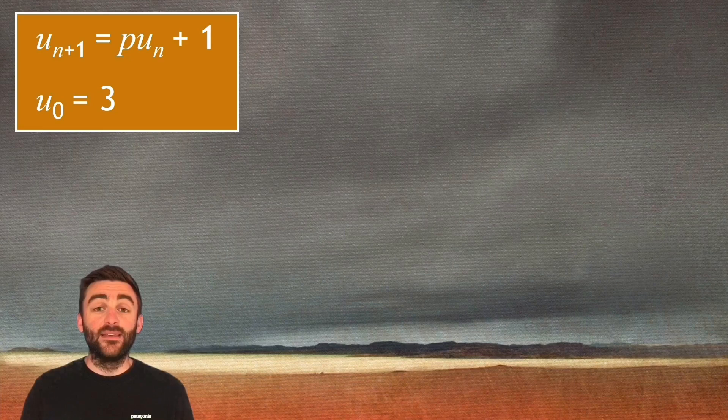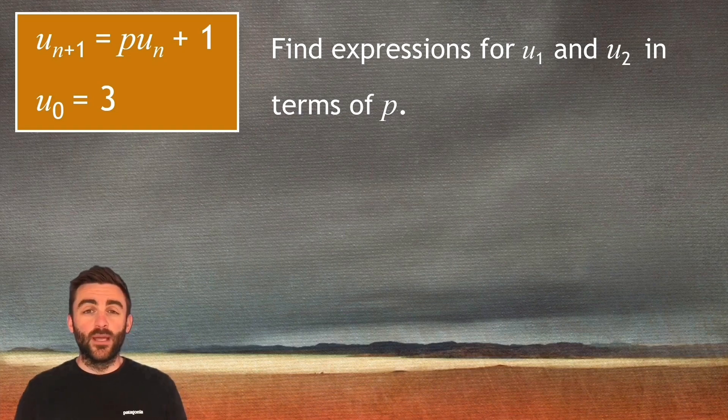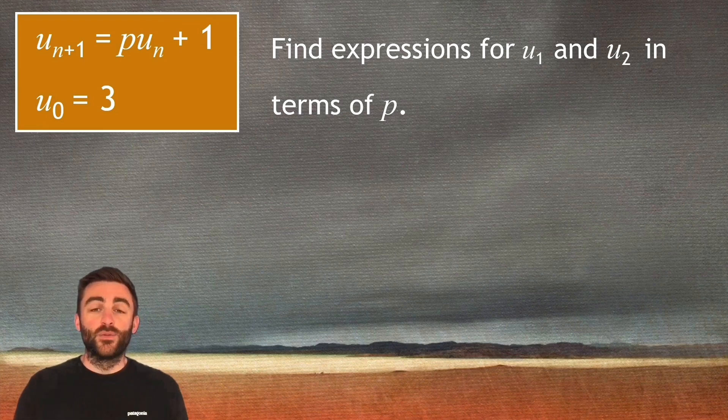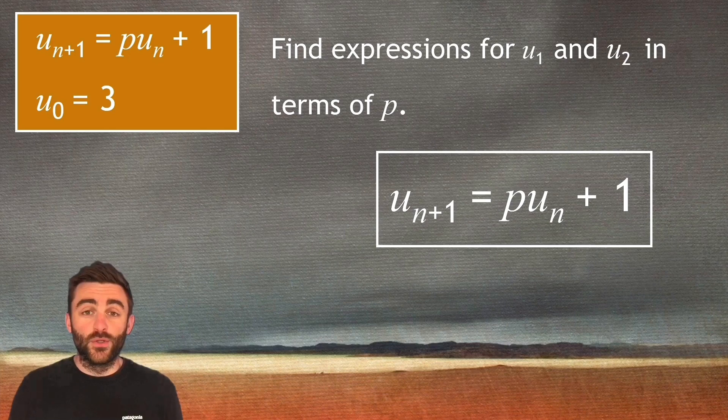So u_{n+1} equals p times u_n add one and they've told us that u_0 is equal to three. Part a would usually say something like find expressions for u_1 and u_2 in terms of p. So that means we can't actually work out what u_1 is or what u_2 is but we can find expressions which involve p. So to start this let's copy down our recurrence relation underneath. Now we'll just follow our usual process.